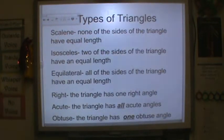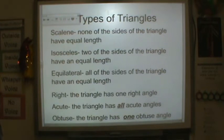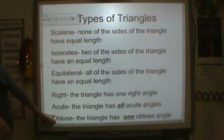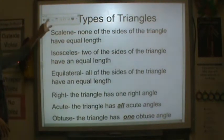And an obtuse triangle — the triangle has only one obtuse angle. It's impossible to have an obtuse triangle with more than one obtuse angle, so just one here.